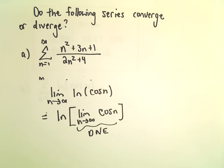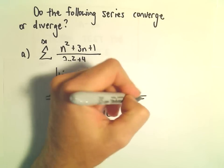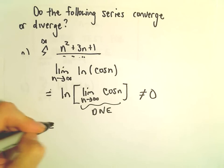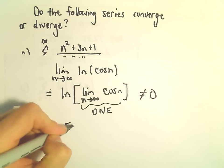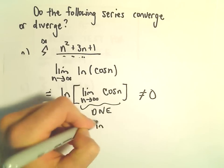Well, if it doesn't exist, it definitely doesn't equal zero. So in this case, again, we could say that the series is divergent.